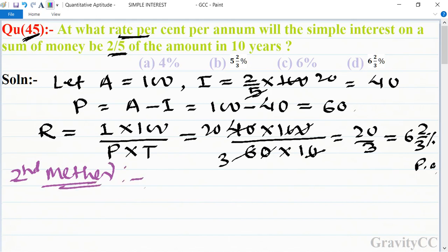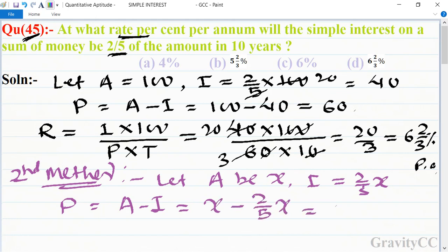Here we let amount be rupees x, so its interest is 2/5 of amount. Principal is equal to x minus 2/5x, which is equal to 5x minus 2x upon 5, so is equal to 3x upon 5.